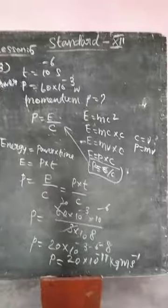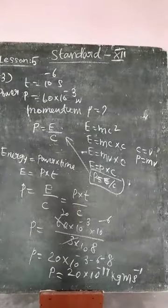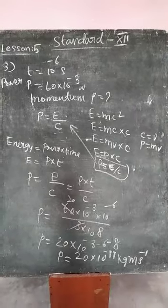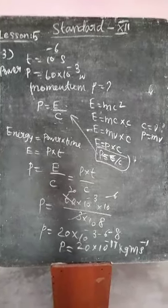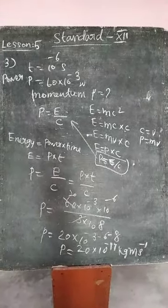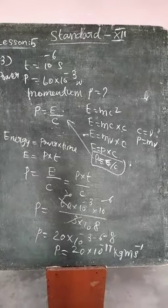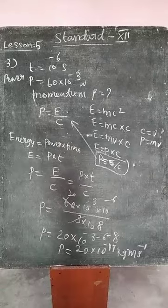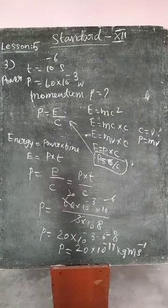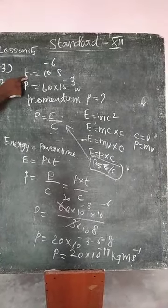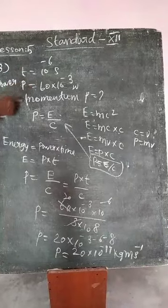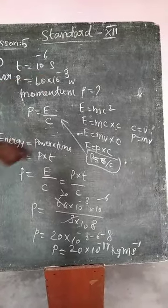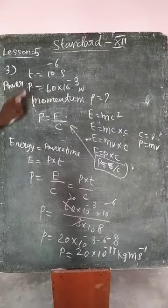Next problem 3: A pulse of light of duration 10 power minus 6 second is absorbed completely by a small object initially at rest. The power of the pulse is 60 into 10 power minus 3 watt. Calculate the kinetic momentum of the object. From the problem, given duration time period T equals 10 power minus 6 seconds, power P equals 60 into 10 power minus 3 watt.